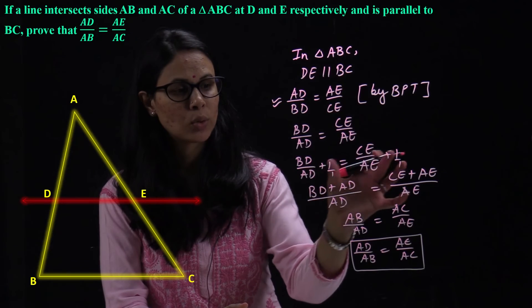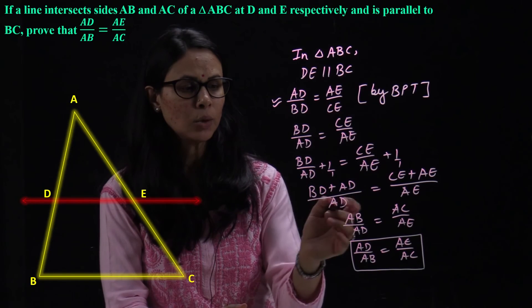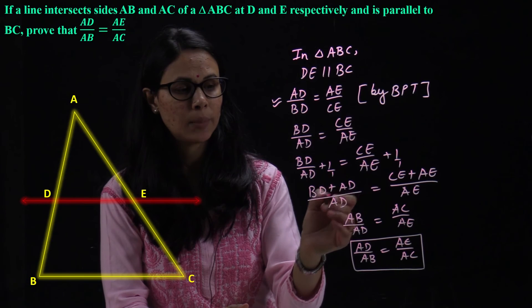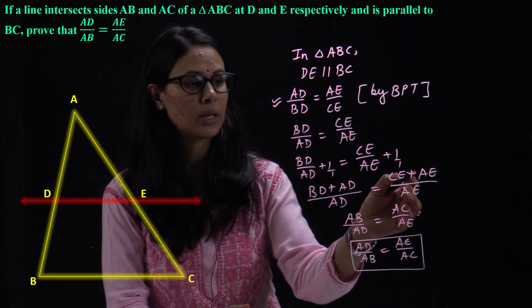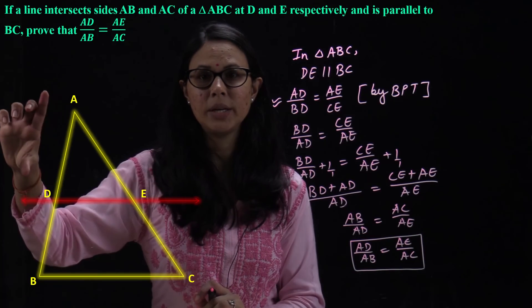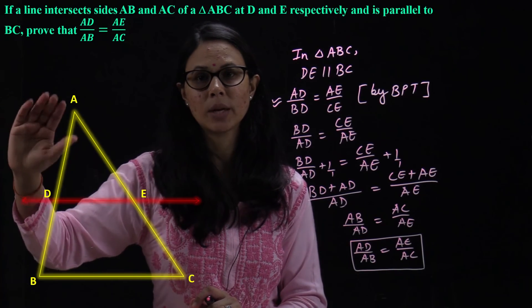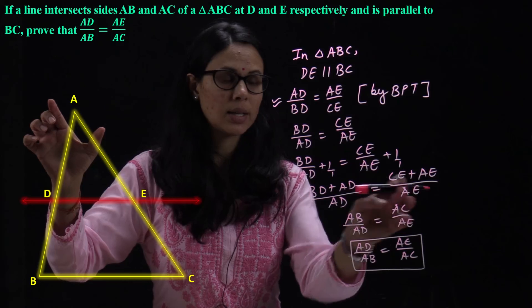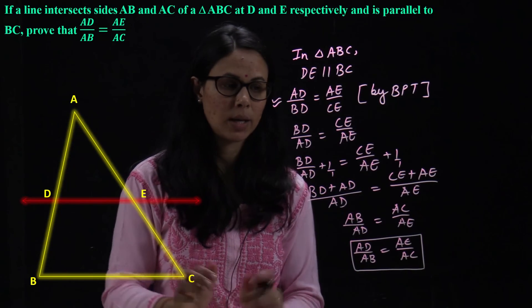On both sides, we add one to this equation, then the answer we get is BD plus AD upon AD is equal to CE plus AE upon AE. So, if we find the sum of BD and AD, then AB is formed. Similarly, here if we find the sum of CE and AE, then AC will be formed.